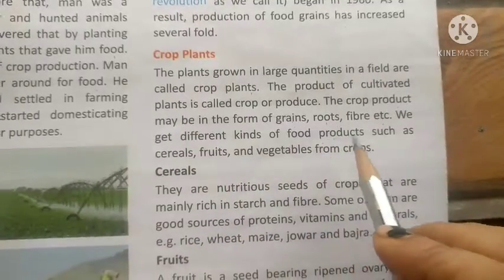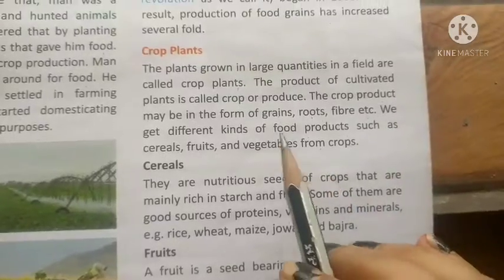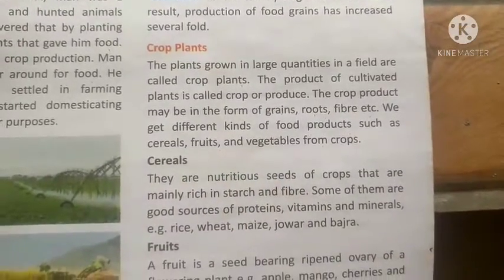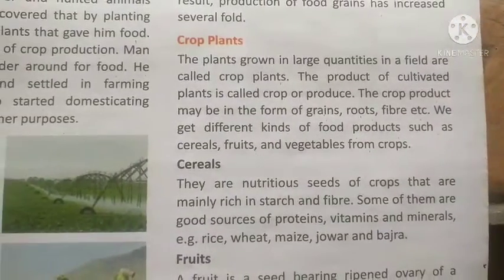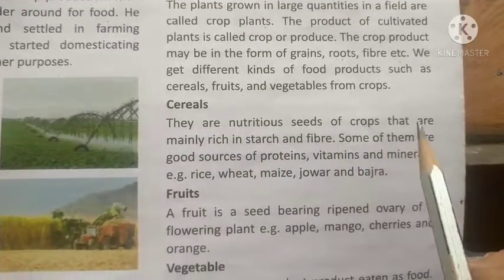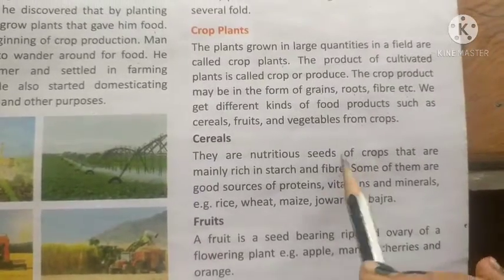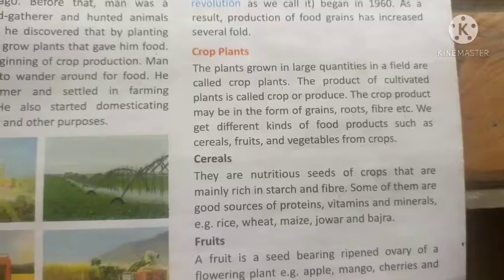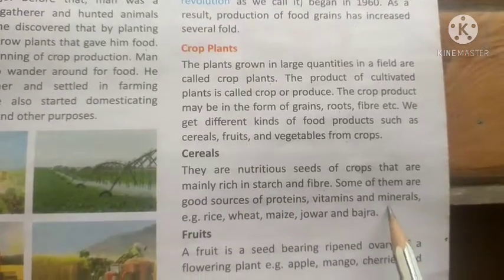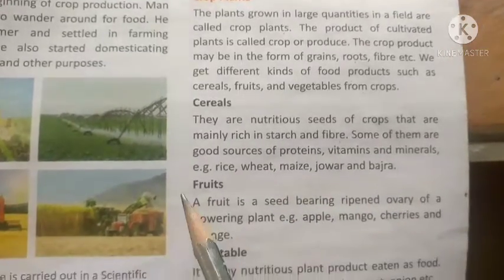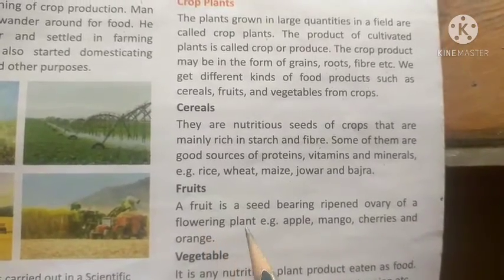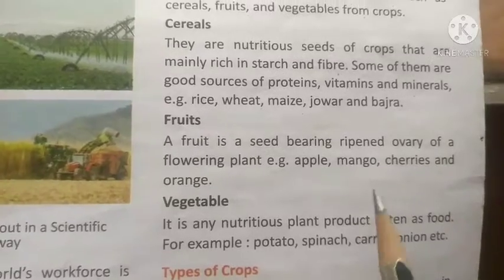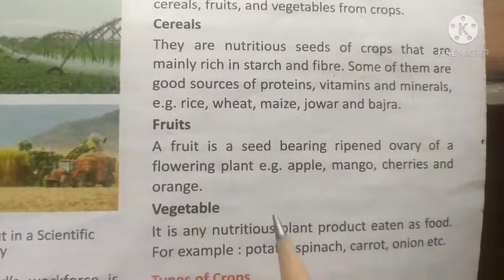We get different kinds of food products such as cereals, fruits, and vegetables from crops. Cereal crops are seeds of crops mainly rich in starch and fiber; some are good sources of protein, vitamins, and minerals — like rice, wheat, maize, jowar, and bajra. Fruits are seed-bearing products of flowering plants — for example, apple, mango, cherries, and orange.